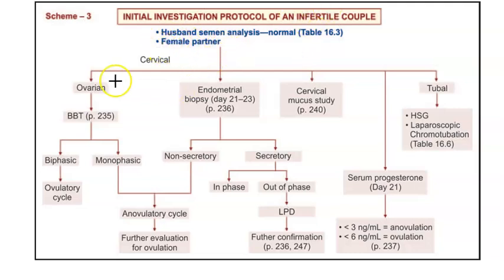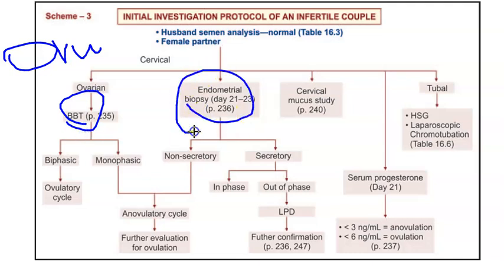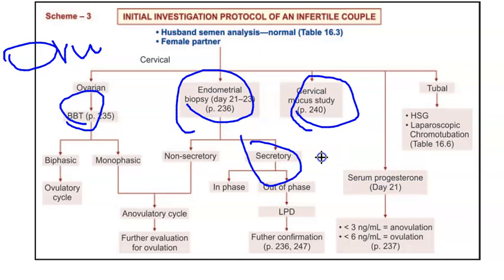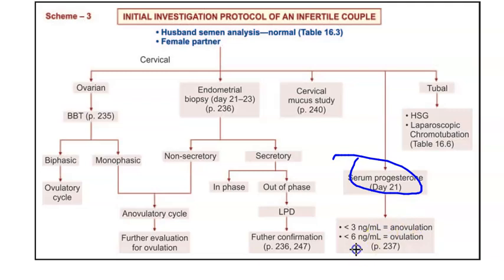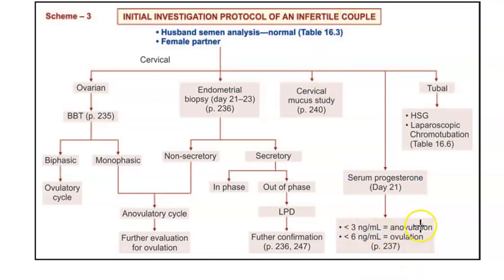First of all, you want to know if she's ovulating. For finding out whether she's ovulating, you can check the basal body temperature. You can do an endometrial biopsy and find out whether it's a secretory type, which would indicate an ovulatory endometrium. You can also check the cervical mucus - during ovulation the cervical mucus will be thin. Coming to serum progesterone, if it is less than six it is ovulatory.